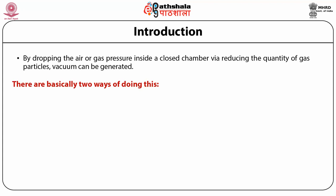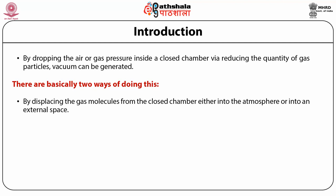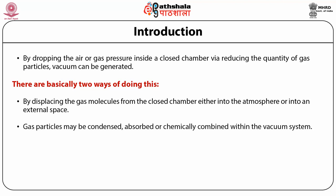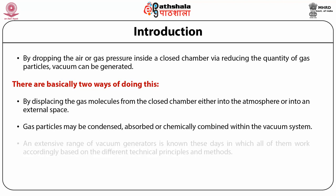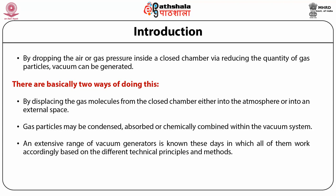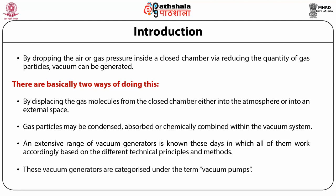There are basically two ways of doing it. First by displacing the gas molecules from the closed chamber either into the atmosphere or into an external place. Gas particles may be condensed, absorbed or chemically combined within the vacuum system. An extensive range of vacuum generators is known these days in which all of them work based on different technical principles and methods. These vacuum generators are categorized under the term vacuum pumps.